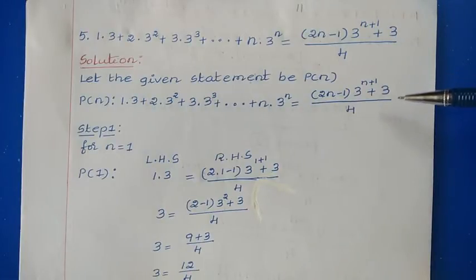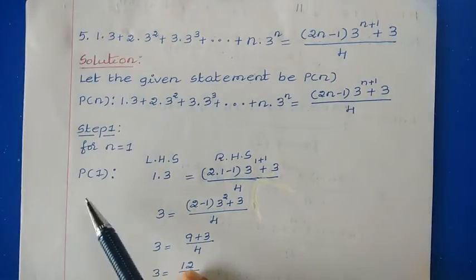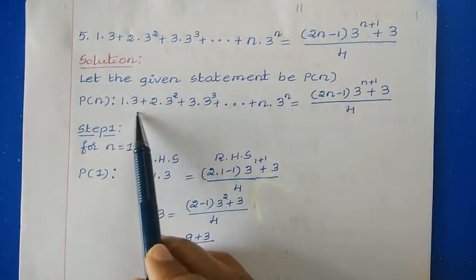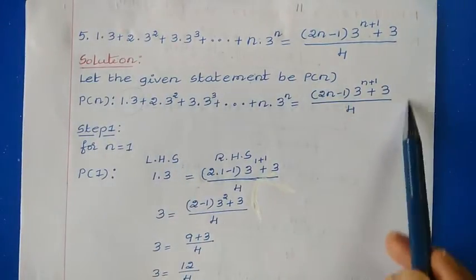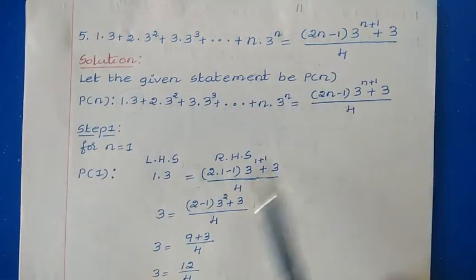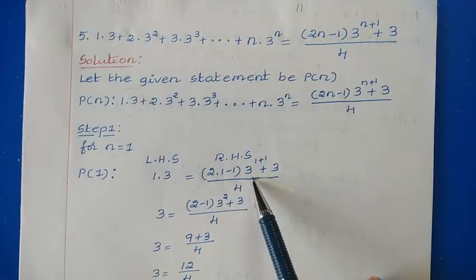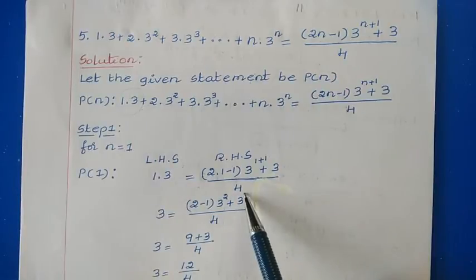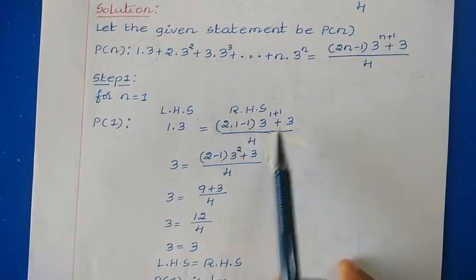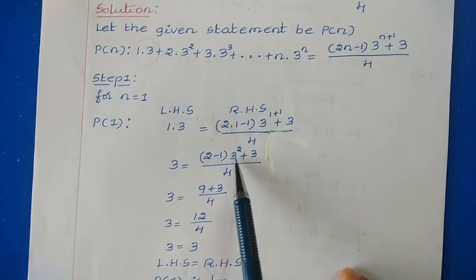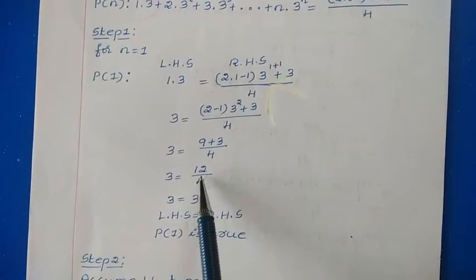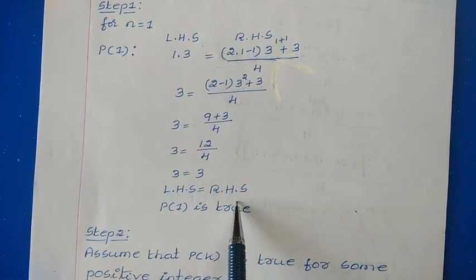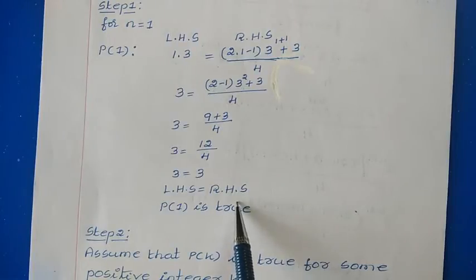First, let us prove this statement for N=1, that is P(1). On the left-hand side, we take the first term, which is 1×3. On the right-hand side, we replace N with 1, getting (2×1−1)×3^(1+1) + 3, divided by 4. That is (2−1)×3² + 3, divided by 4, which is 1×9 + 3 divided by 4, giving 12/4 = 3. So LHS equals RHS, meaning the statement is true for P(1).